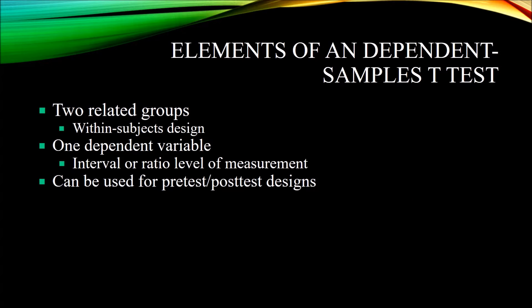Let's take a look at the elements of a dependent samples t-test. Before I get into the structure of a paired samples t-test, I'll set up an example. Let's say we have a group of 50 participants, and we want to look at possible improvement in these participants on anxiety. Let's say we administer a treatment — rational emotive behavior therapy, REBT — to see if we can create an improvement in how the participants experience anxiety.